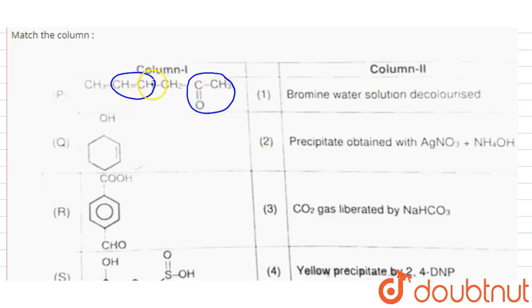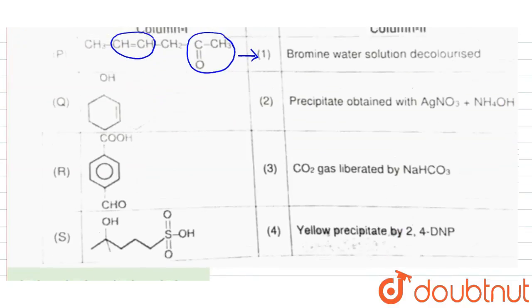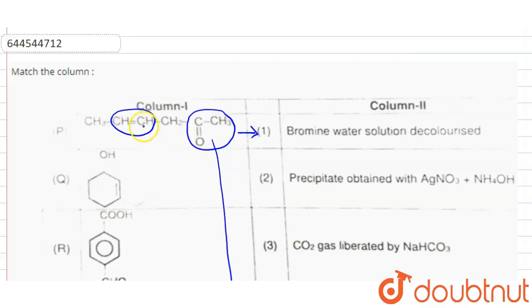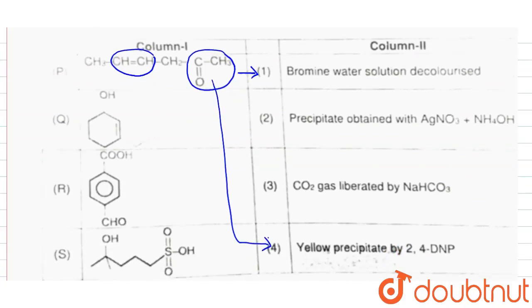So this matches with 1 and also 4, because the alkene group gives a positive test with the bromine water and the carbonyl group gives positive test with the 2,4-dinitrophenylhydrazine. So that matches with 1 and 4.